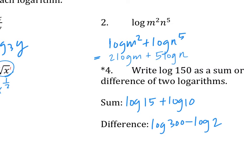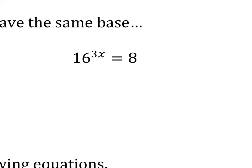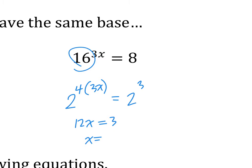Next section: same base, so we can solve these equations quickly if they have the same base. For example: 16 to the 3x equals 8. If we can turn both 16 and 8 to have the same base, we can solve it. The common base is 2. 16 is 2 to the 4th, so this becomes 2 to the 4 times 3x. 8 is 2 to the 3rd. Since the bases are the same, the exponents must be equal: 4 times 3x equals 12x equals 3, so x equals one fourth.